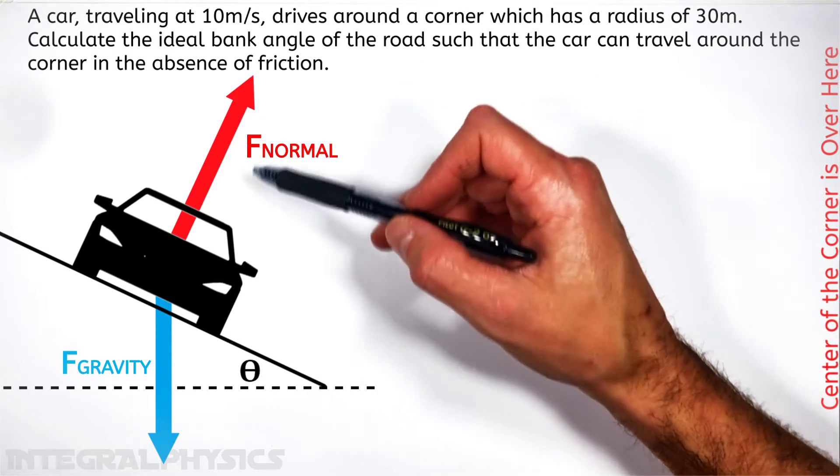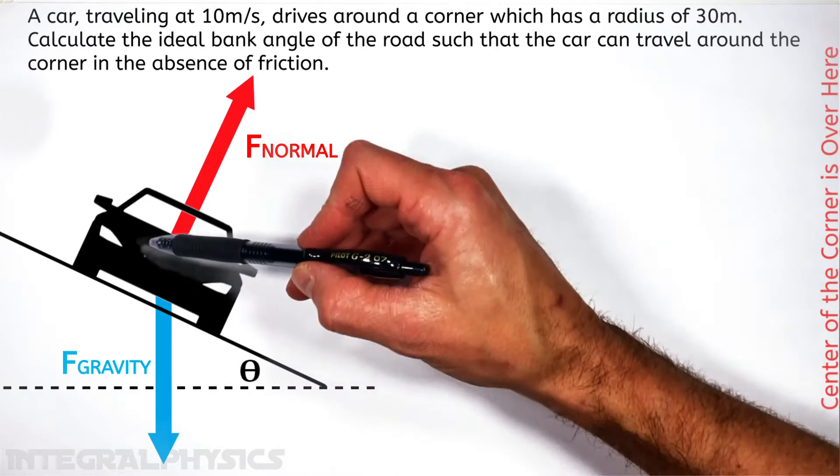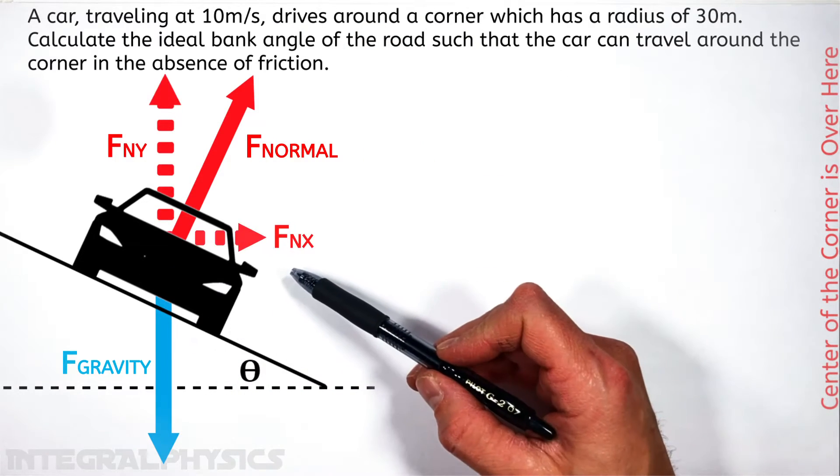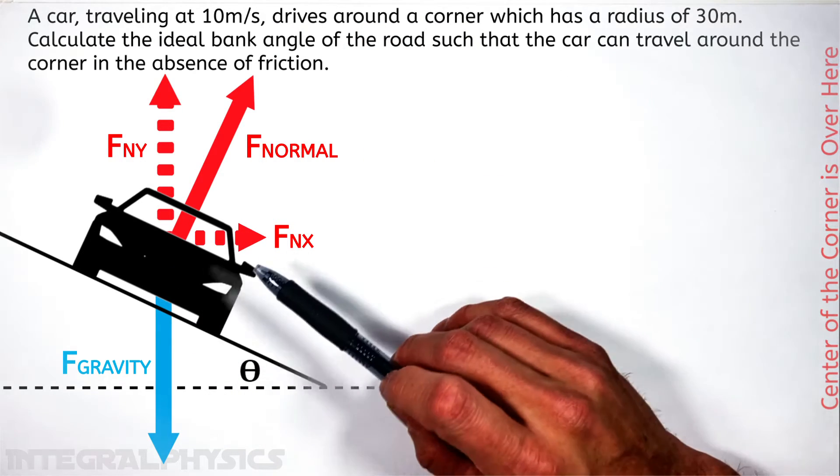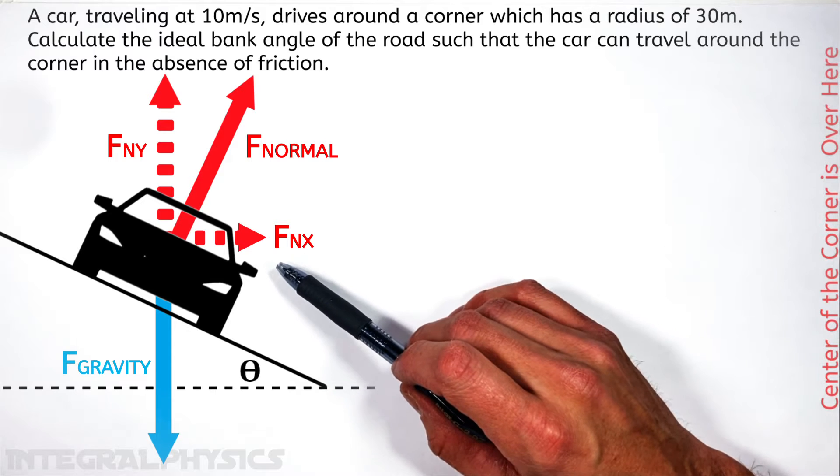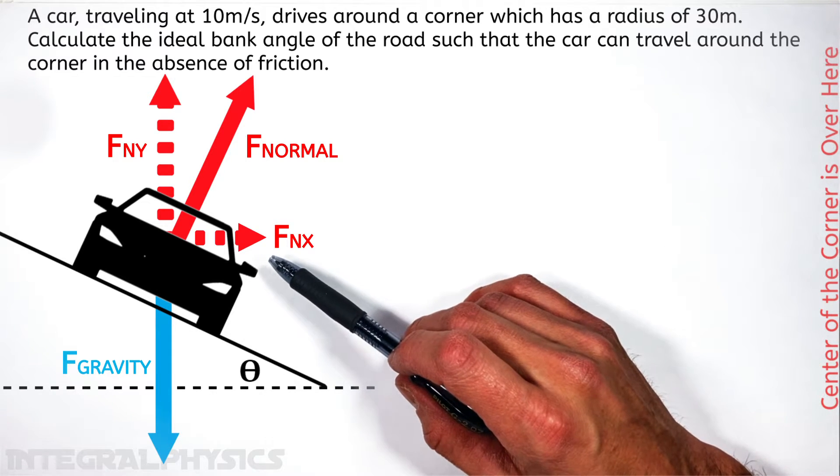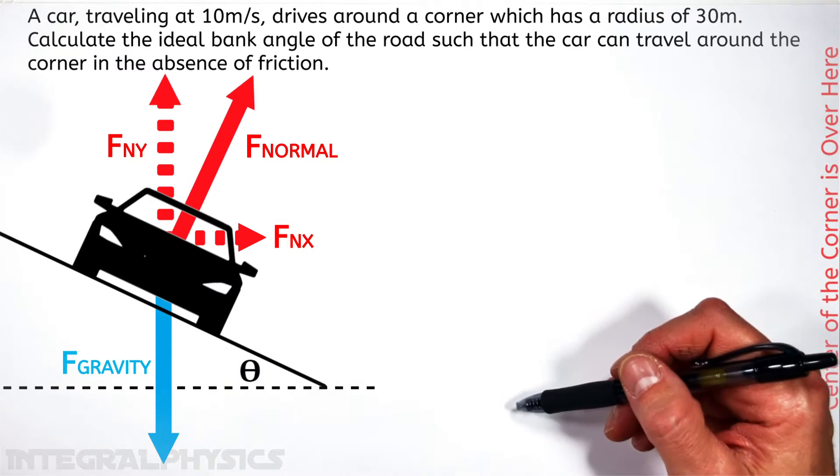And the key here is that this normal force can be broken up into a vertical and a horizontal component. And it's that horizontal component of the normal force which is going to cause the car to go around this corner.